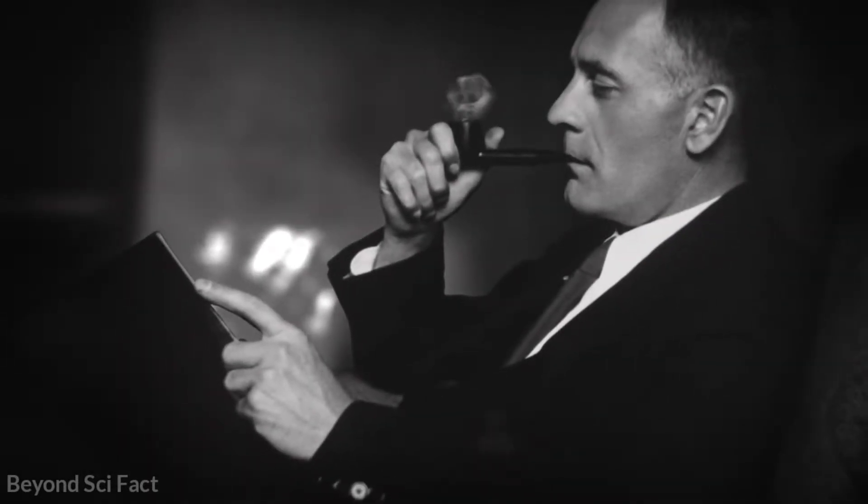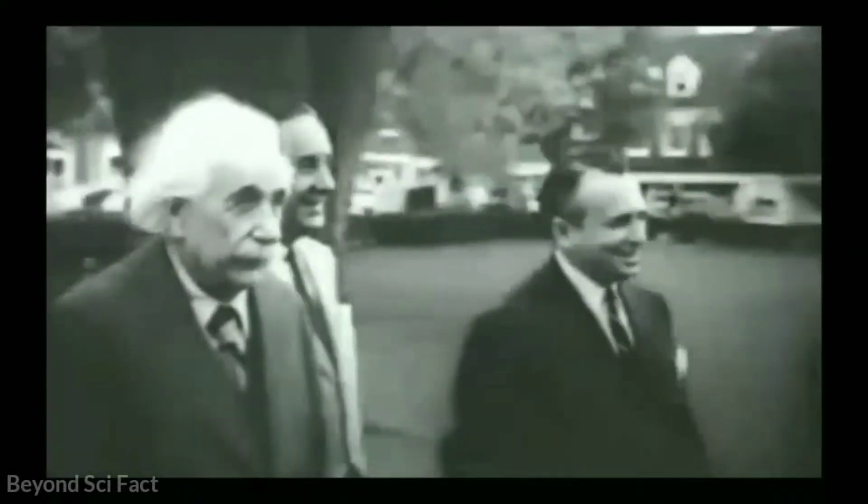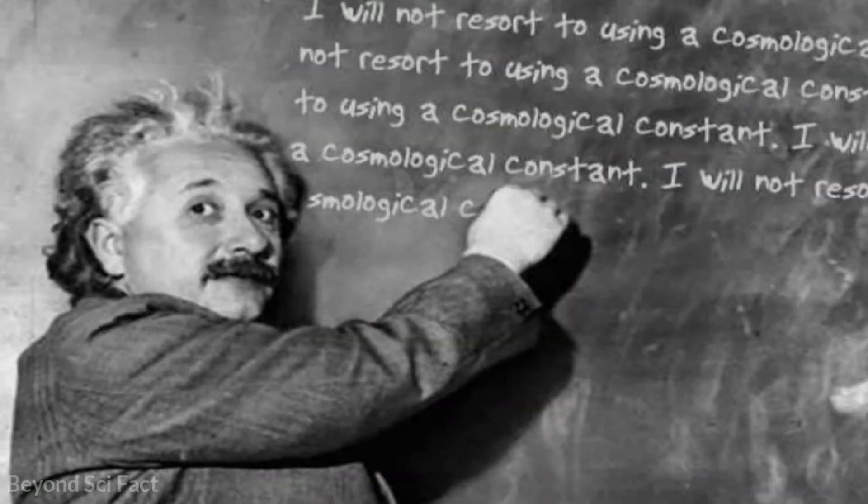But in 1929, Hubble gave one of his greatest laws, which is also the first evidence of the Big Bang: that the universe is expanding. This made a serious problem for Einstein's equations, so in 1931 he finally decided to abandon his concept.